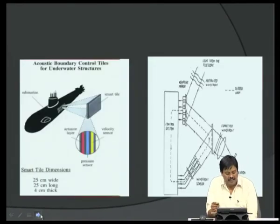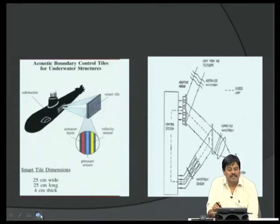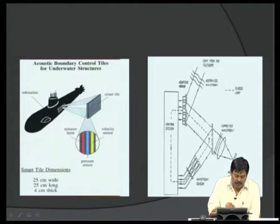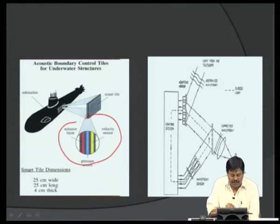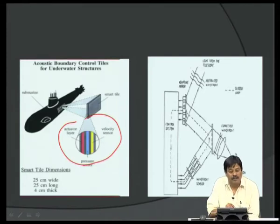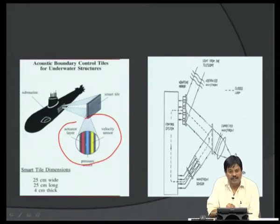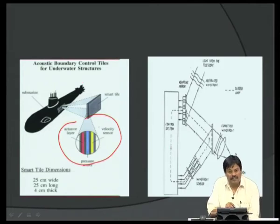Another defense application is boundary control for submarine maneuver and flow in underwater structures, achieved using a smart tile. The smart tile has a pressure sensor to sense pressure, a velocity sensor to gauge movement of the submarine and any approaching enemy vehicle, and a piezo actuator to actuate and stabilize control. Smart material systems are very useful for submarines and underwater structures.